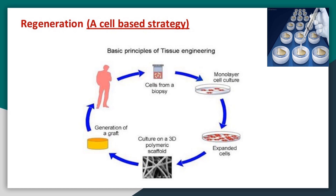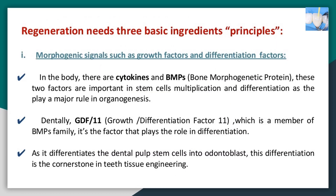Regeneration needs three basic ingredients. First: morphogenic signals such as growth factors and differentiation factors. In the body, there are cytokines and BMPs — bone morphogenetic proteins. These two factors are important in stem cell multiplication and differentiation, as they play a major role in organogenesis.